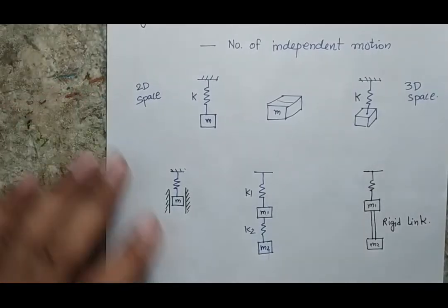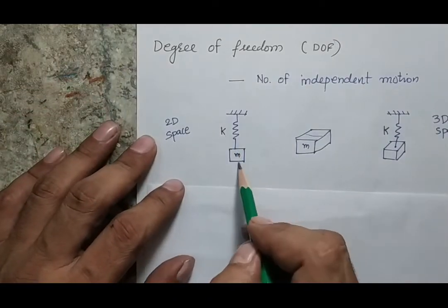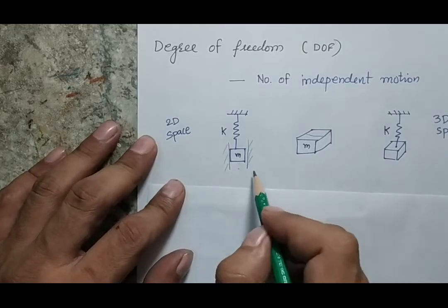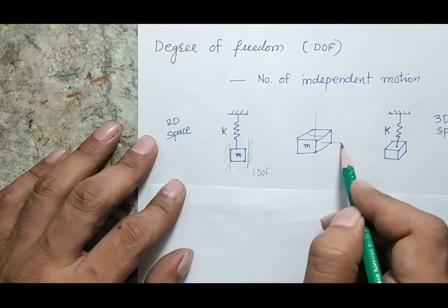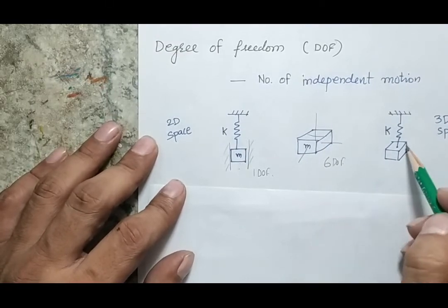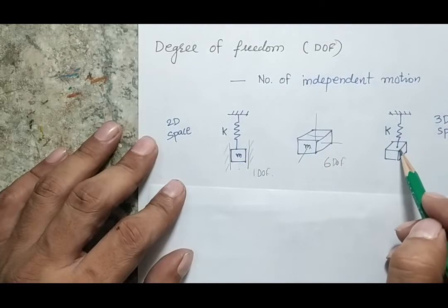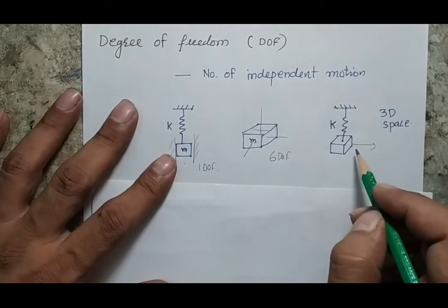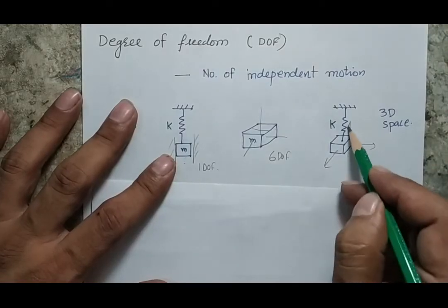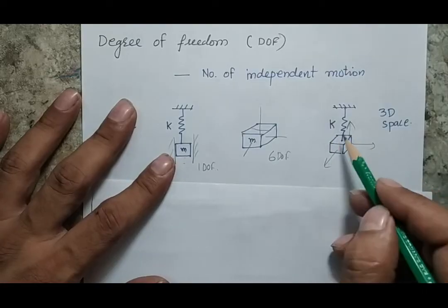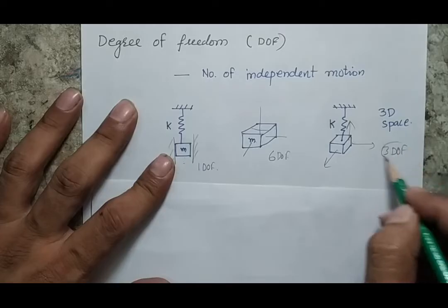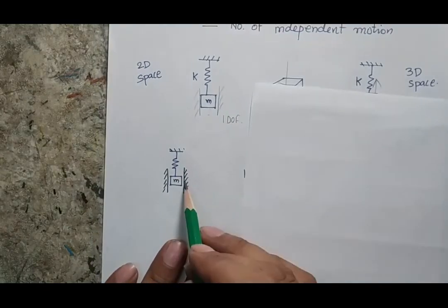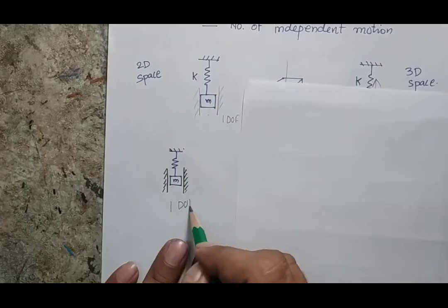In vibratory motion we commonly define a simple spring-mass system. If a mass can only move in a channel, the system has one degree of freedom. A body in free space has six degrees of freedom, but if the spring allows only translational motion with no rotation, there will be only three degrees of freedom. When the mass can only slide in the channel, that is a one-degree-of-freedom case.